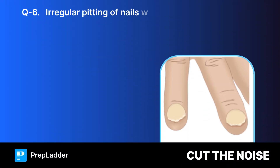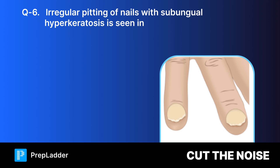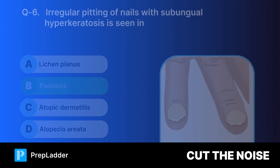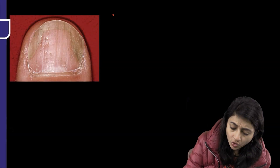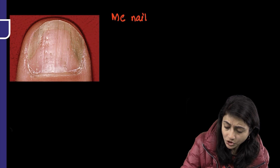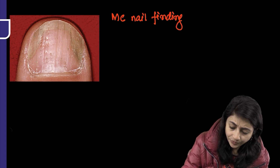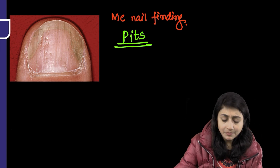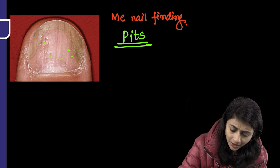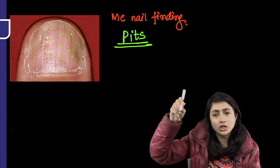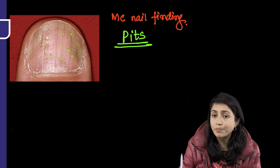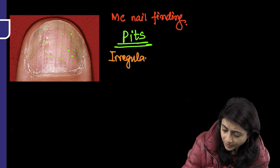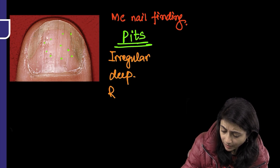Question 6: Irregular pitting of nails with subungual hyperkeratosis is seen in which condition? The correct answer is psoriasis. The most common nail finding in a patient with psoriasis is pitting. Pits are shallow depressions seen on nails. The pits in psoriasis are typically irregular, deep, and random.